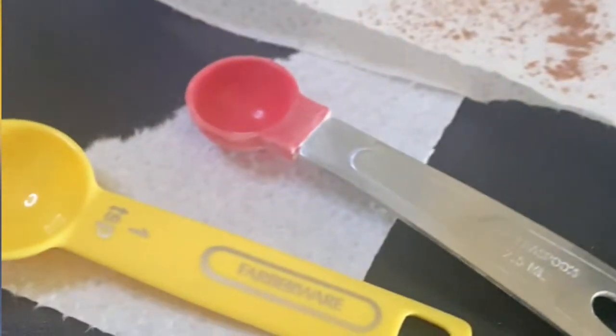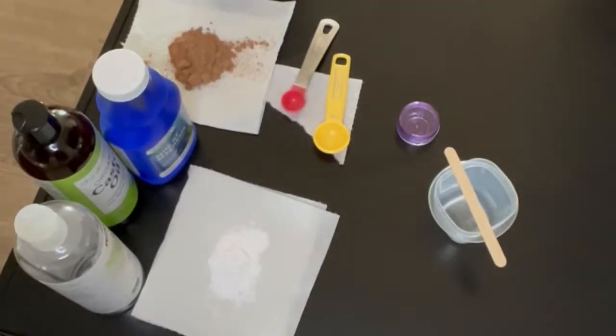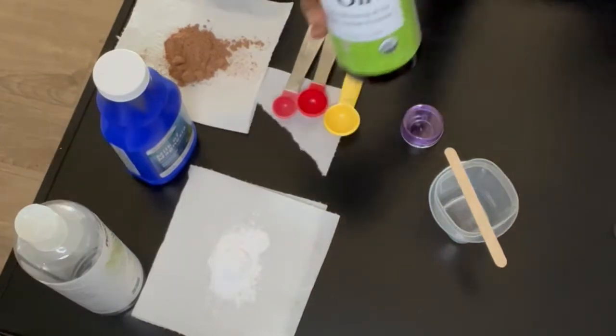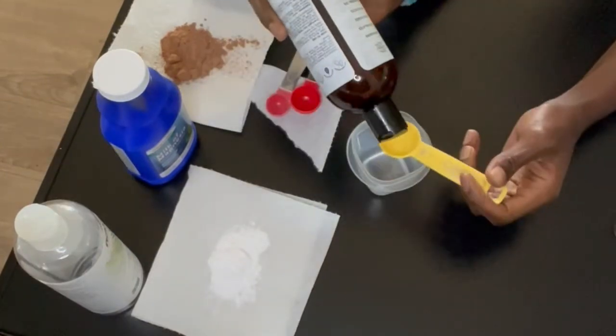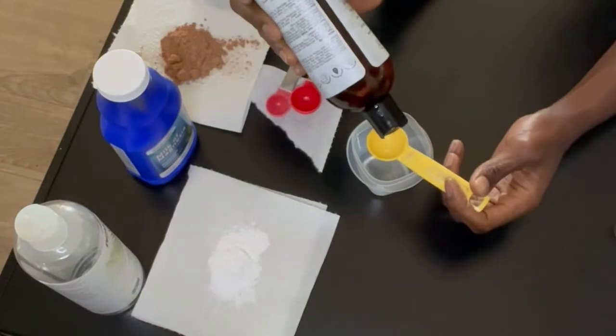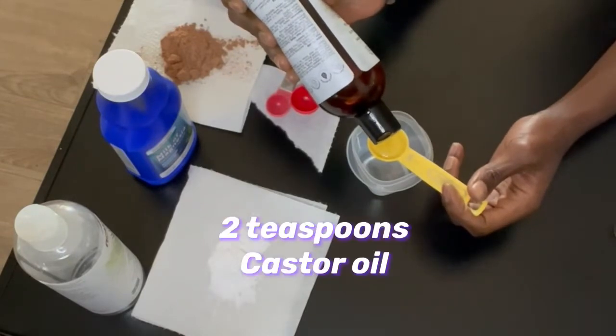Here are my measuring tools, my little container for the pomade, and some mixing items. Now it's time to whip this pomade. I'm going to start with two teaspoons of castor oil.